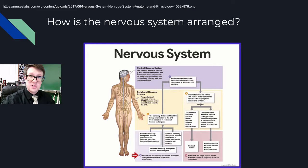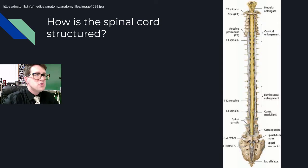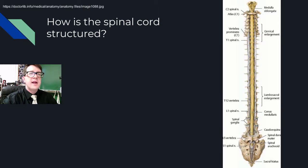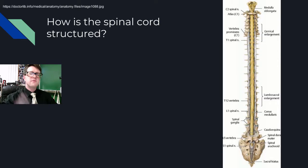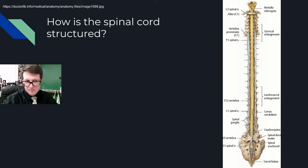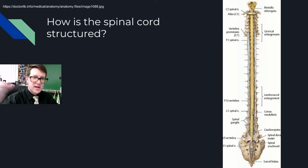If we zoom in on the spinal cord, it starts right at the base of your brain — right after the medulla — and continues down to somewhere around L1. As it moves from its attachment to your brain down to L1, the spinal cord progressively gets smaller and smaller. Nerves pop off along the way, but overall it gets smaller in size until you end with a cone called the conus medullaris, visible at the very end in the photo. After that, you get a bunch of nerves that spread out, called the cauda equina.